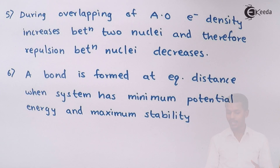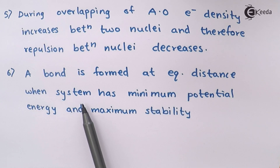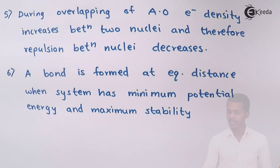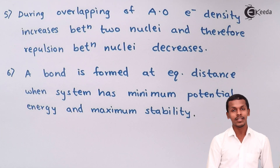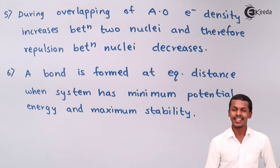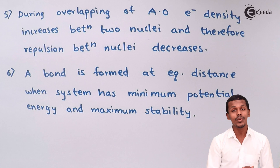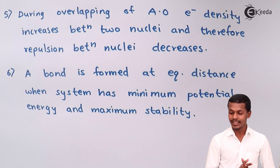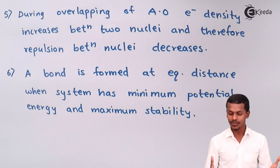The sixth postulate says: a bond is formed at equilibrium distance when the system has minimum potential energy and maximum stability. If two atoms have combining atomic orbitals of the same energy, they will have minimum potential energy and acquire maximum stability — that is the only reason they form a bond. This makes the bond stronger and better able to hold the two atoms together.